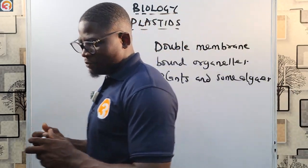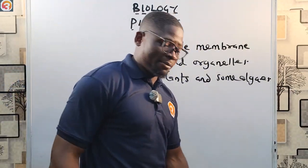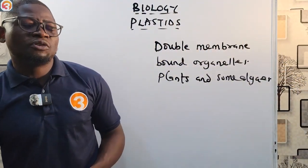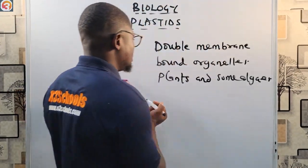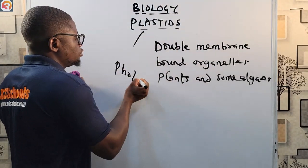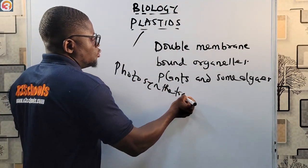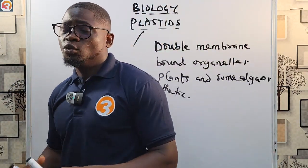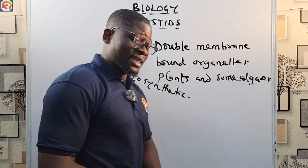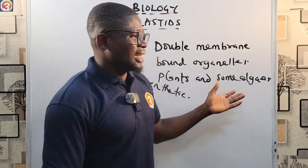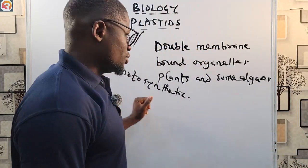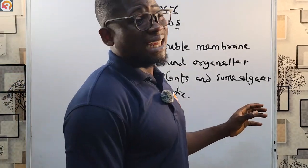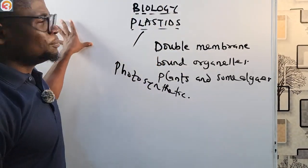Plastids are found in plants and some algae. It is also very important to know that some of these plastids are photosynthetic while others are not photosynthetic.